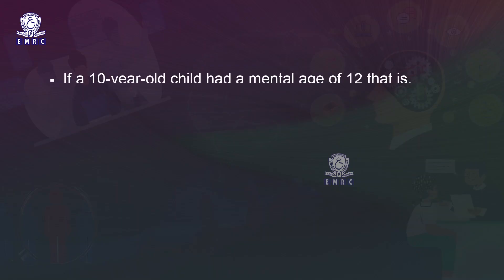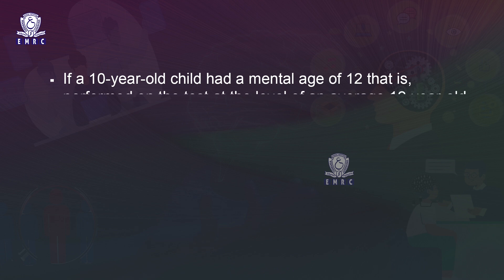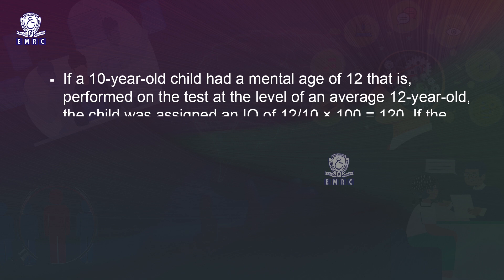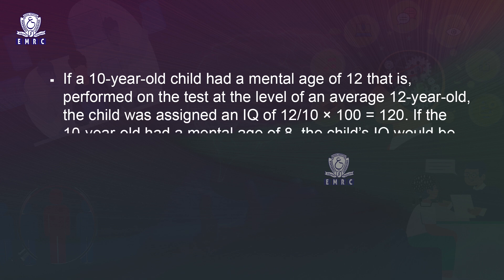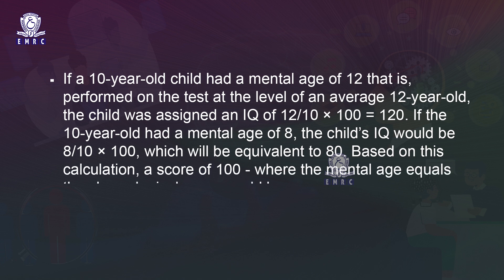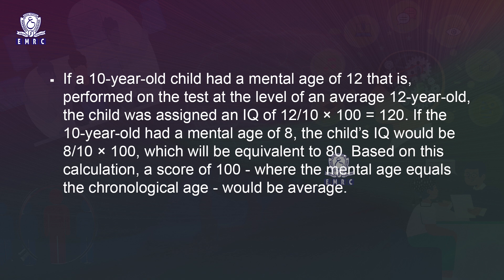IQ is computed by taking the ratio of mental age to chronological age and multiplying by 100. For example, if a 10-year-old child had a mental age of 12, the IQ would be (12 ÷ 10) × 100 = 120. If a 10-year-old had a mental age of 8, the IQ would be (8 ÷ 10) × 100 = 80. A score of 100, where mental age equals chronological age, is considered average.